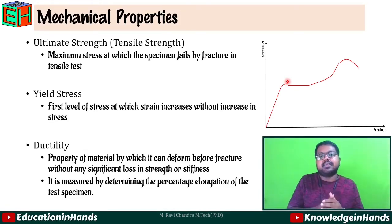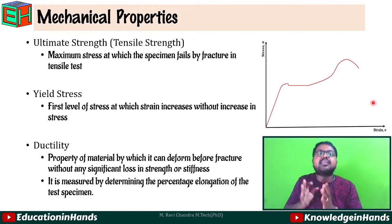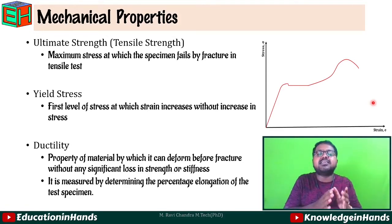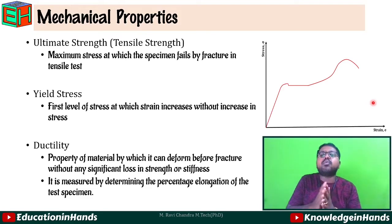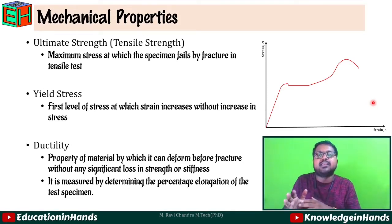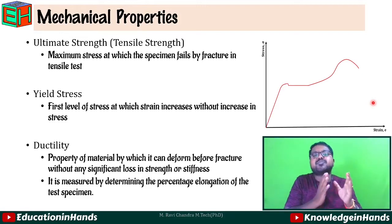Next is ductility. From origin to end on the stress-strain curve, the member gives a very large strain. The beautiful concept in case of steel is its ductile nature. Ductility is the property of the material by which it can deform before fracture without any significant loss in strength or stiffness. Before fracture, the body tends to deform — that is the main advantage of steel. Ductility is measured as the percentage elongation in the specimen after the tensile test. Ultimate strength, yield stress, and ductility are all identified through tensile testing of a specimen.